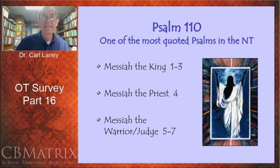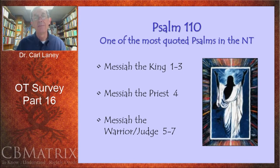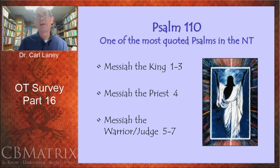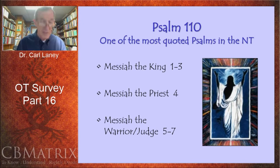His priestly ministry is featured in verse 4: 'The Lord has sworn he will not change his mind; you are a priest forever according to the order of Melchizedek.' Jesus couldn't be a priest in the order of Aaron because he wasn't a Levite — his ancestry came from Judah, not Levi. So his priesthood has to be of a different order — the order of Melchizedek, the king-priest described in Genesis 14. The writer of Hebrews makes this point: that Jesus has a better priesthood, the priesthood of Melchizedek, in Hebrews chapter 7.